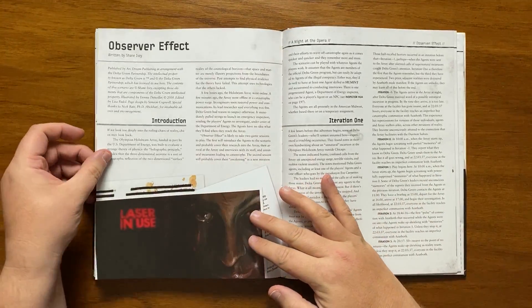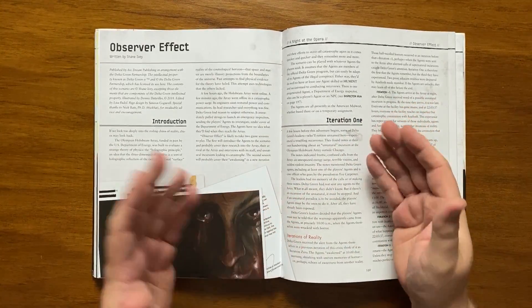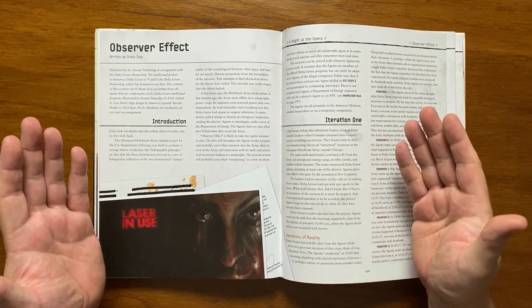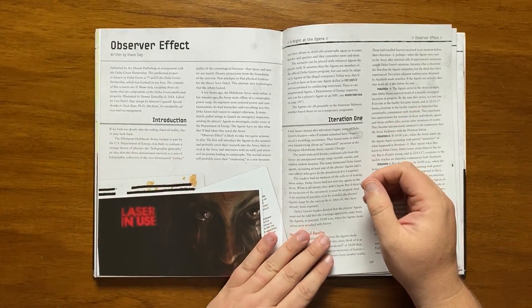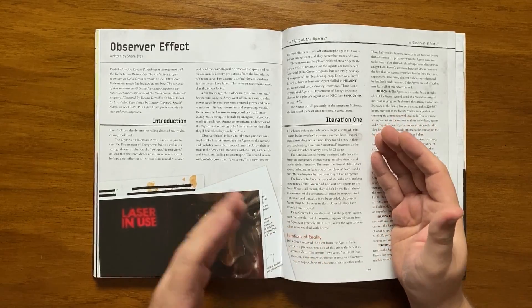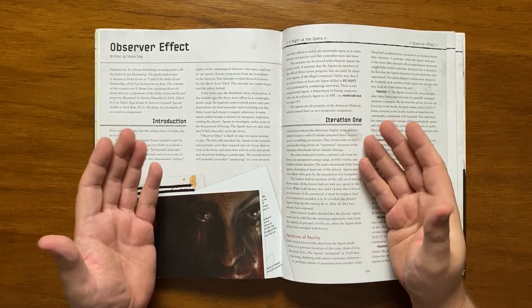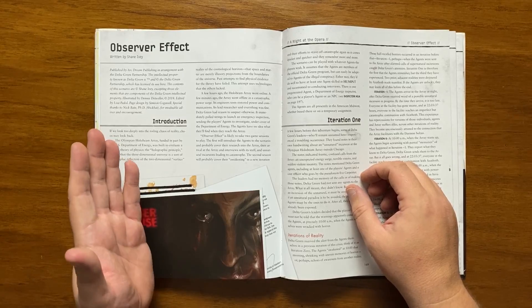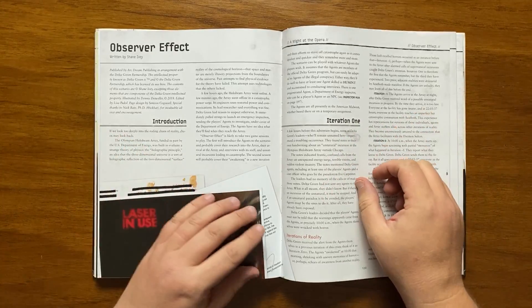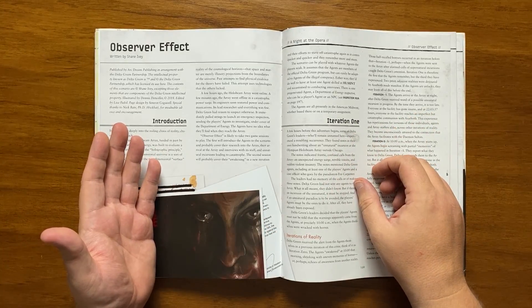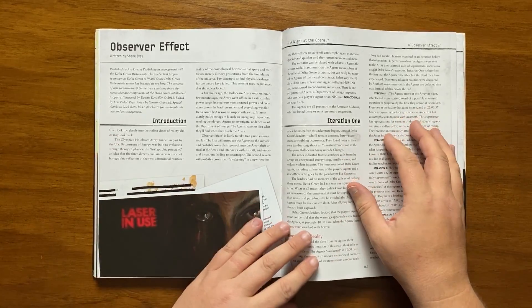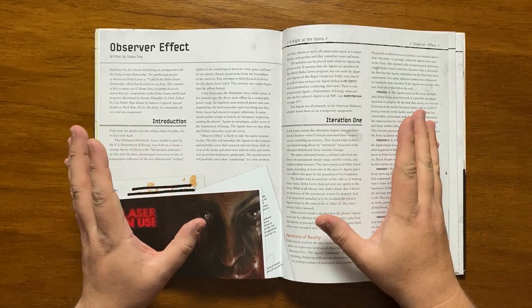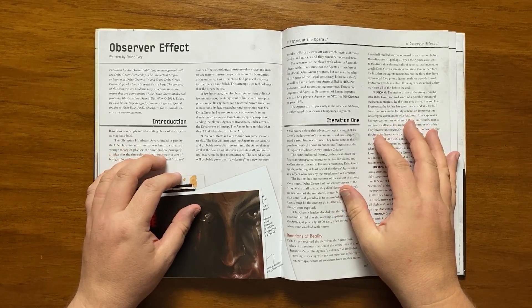The scenario begins at the Olympian Hollowbeam Array, which has been looking into a strange physics theory called the Holographic Principle, being partially funded by the US Department of Energy. The idea behind it is that three-dimensional space is a kind of holographic reflection of the two-dimensional surface reality of the cosmos, the principle being that space and matter are merely projections from the extremes of the universe. The Hollowbeam Array has gone online for a few hours and then a few minutes ago went offline from a catastrophic power surge.